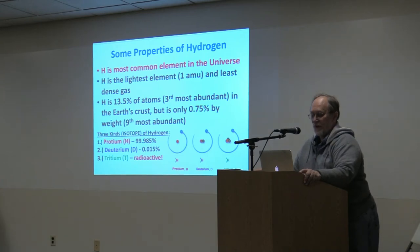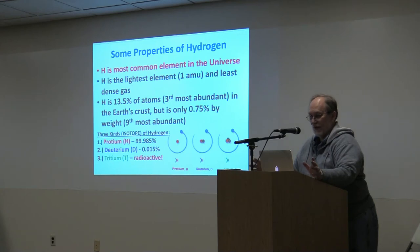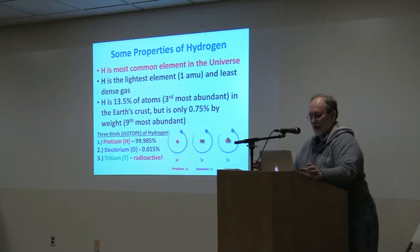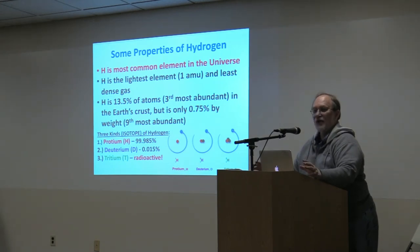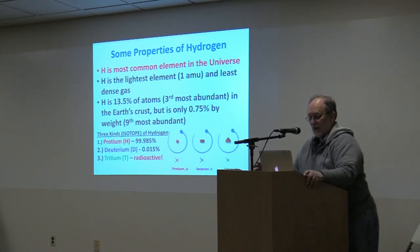Some basic properties of hydrogen: hydrogen is the most common element in the universe. It's the lightest element, with a single atomic mass unit — one proton and one electron — and it's the least dense gas that exists. Hydrogen makes up 13.5% of atoms on Earth and is the third most abundant element, but because it's so light, it's only about 0.75% of the weight of the Earth's crust.